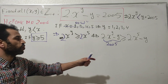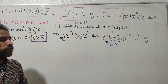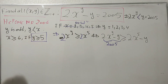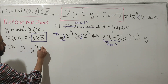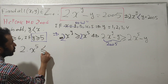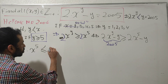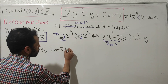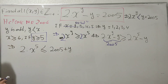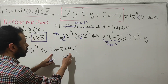Moving the minus y to the right and flipping the inequality gives 2·x^5 ≤ 2005 + y. Also, since y is strictly less than x, we get 2·x^5 < 2005 + x.